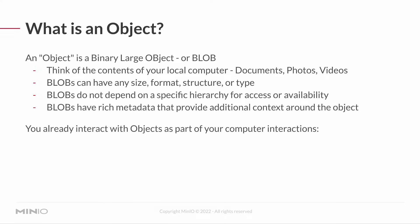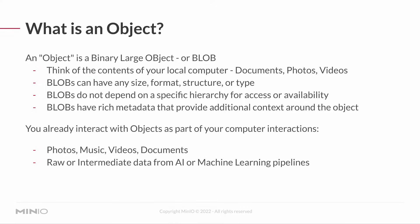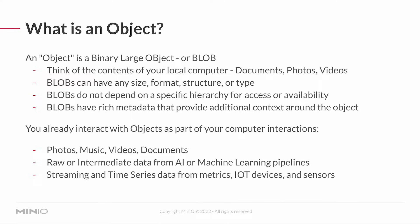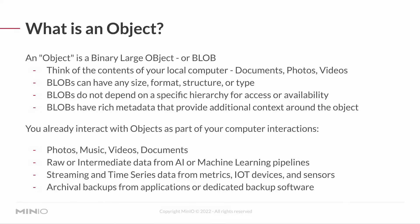As a computer user, you're already using objects all the time. Your documents, your songs, anything that you interact with and manipulate on your computer is a binary large object — that could be photos, documents, intermediate data from AI or machine learning pipelines. You may also be working with streaming or time series data from metrics, Internet of Things devices, or sensors. You can even be working with backups from applications or dedicated software backups. All of those things can be blobs and, therefore, can be stored in a MinIO bucket.